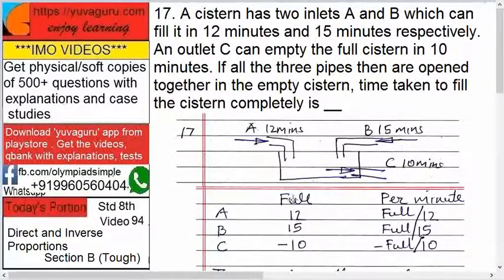A, B, C. First write it for full. A can fill it in 12 minutes. B in 15 minutes. And C in 10 minutes. It's minus 10 because it is emptying.